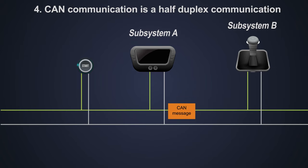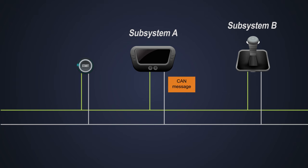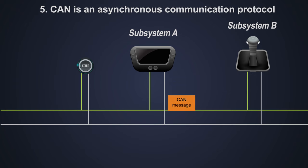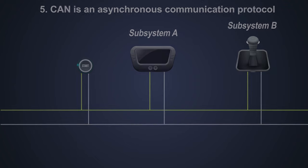CAN communication is a half-duplex communication protocol. That means only one device is able to send the data message on the bus at a time. CAN is an asynchronous communication protocol. We already saw about the asynchronous communication protocol in this video with an amazing analogy. Please check this video out to know more about it.